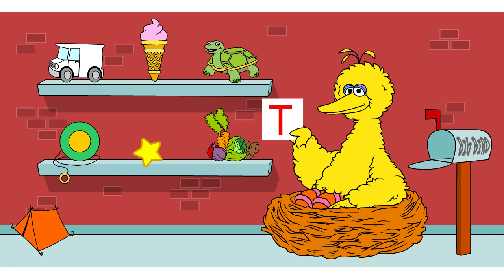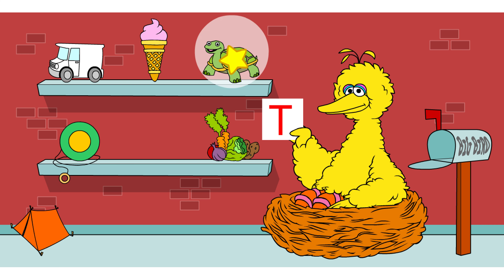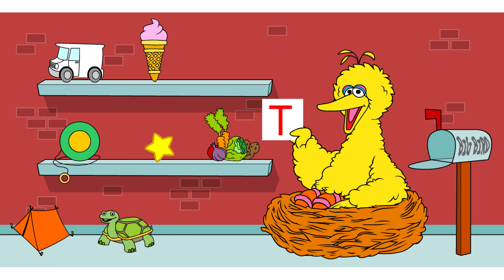Tint. There are two more things on my shelves that start with the letter T. You can find them. Turtle. I see one more thing that starts with the letter T. Click on it. Truck. Hey, you found all three of them. You sure know your letters.